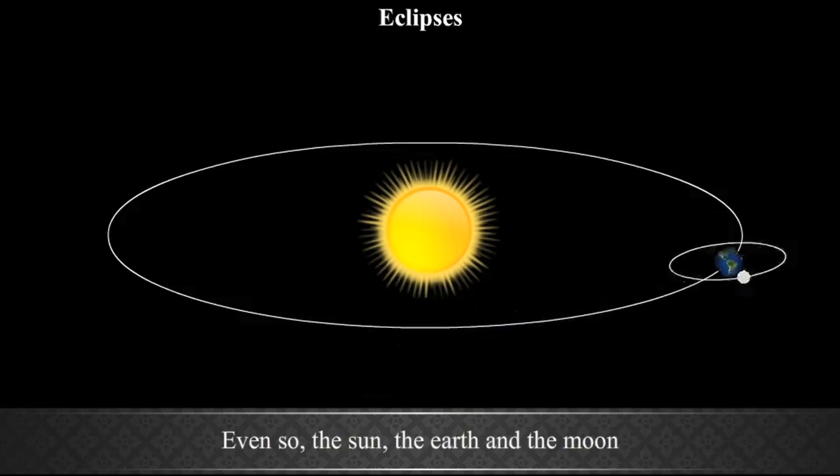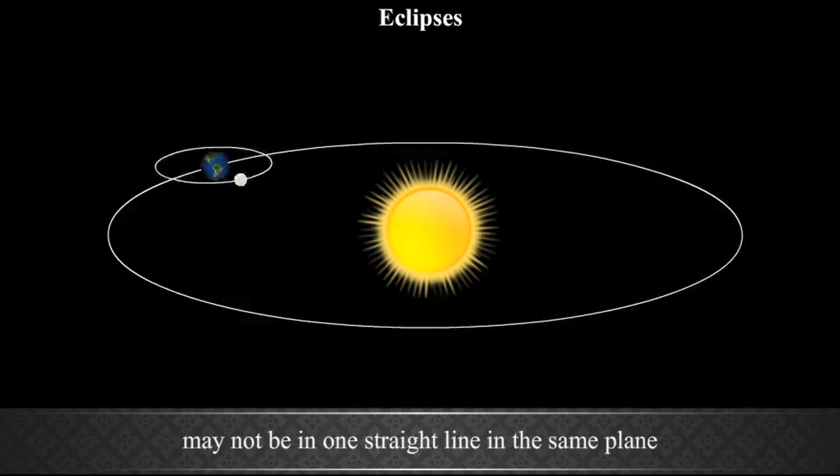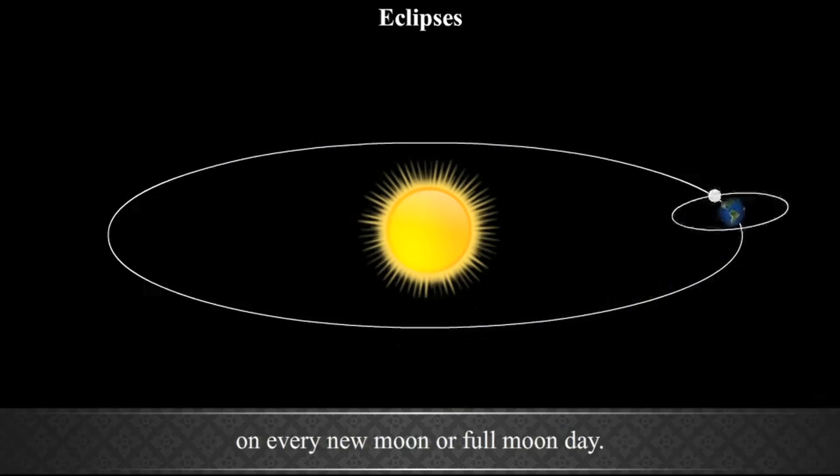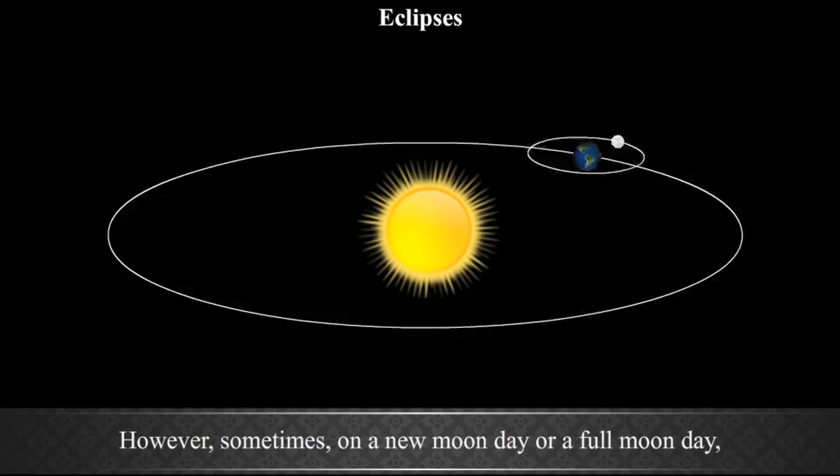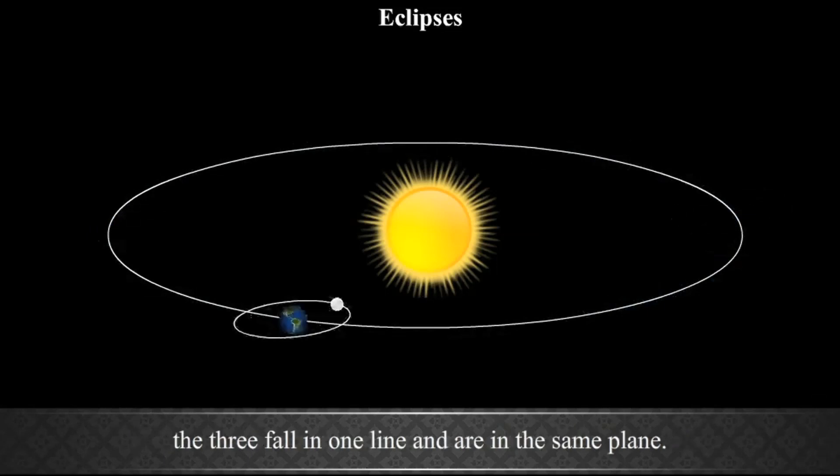Even so, the Sun, the Earth and the Moon may not be in one straight line in the same plane on every new moon or full moon day. Hence, eclipses do not occur on each new moon or full moon day. However, sometimes on a new moon day or a full moon day, the three fall in one line and are in the same plane. Eclipses occur on such occasions. Eclipses may be solar or lunar.